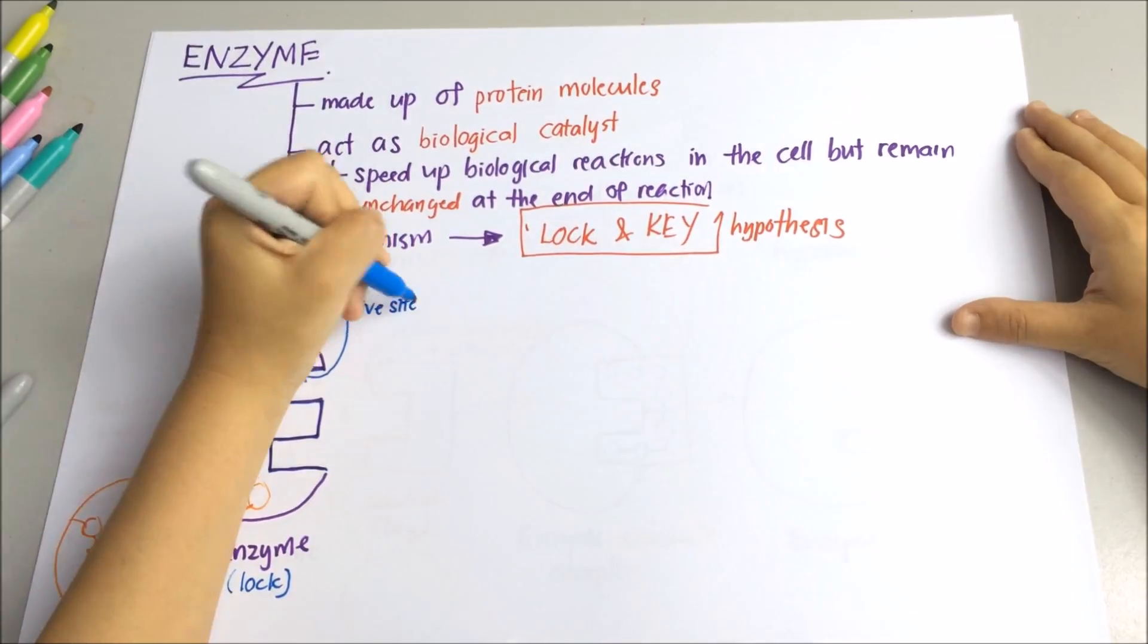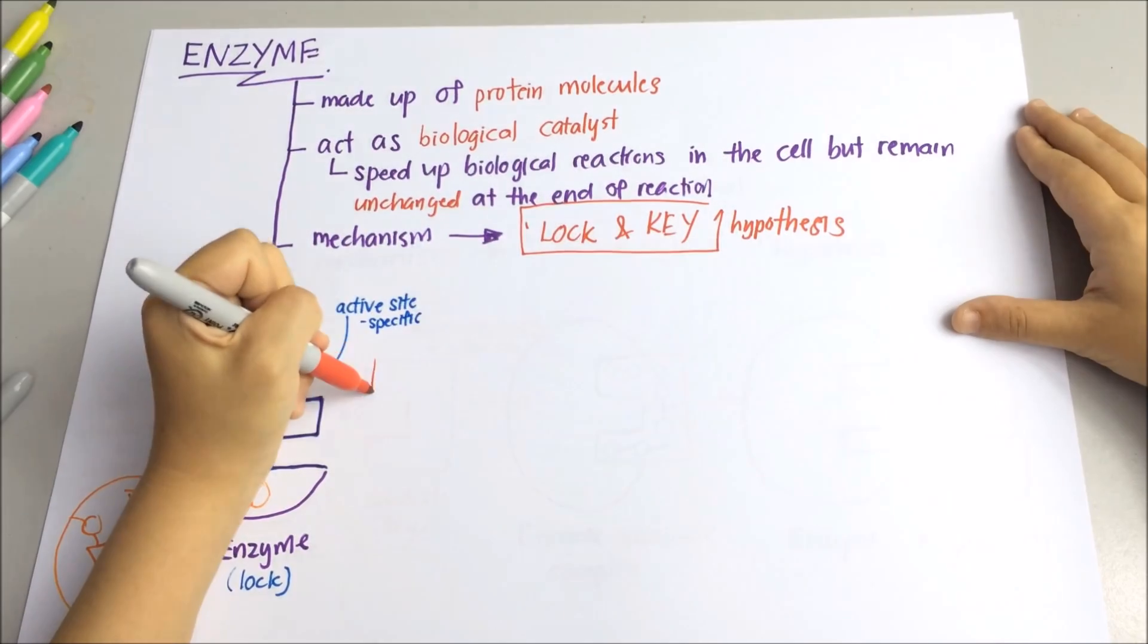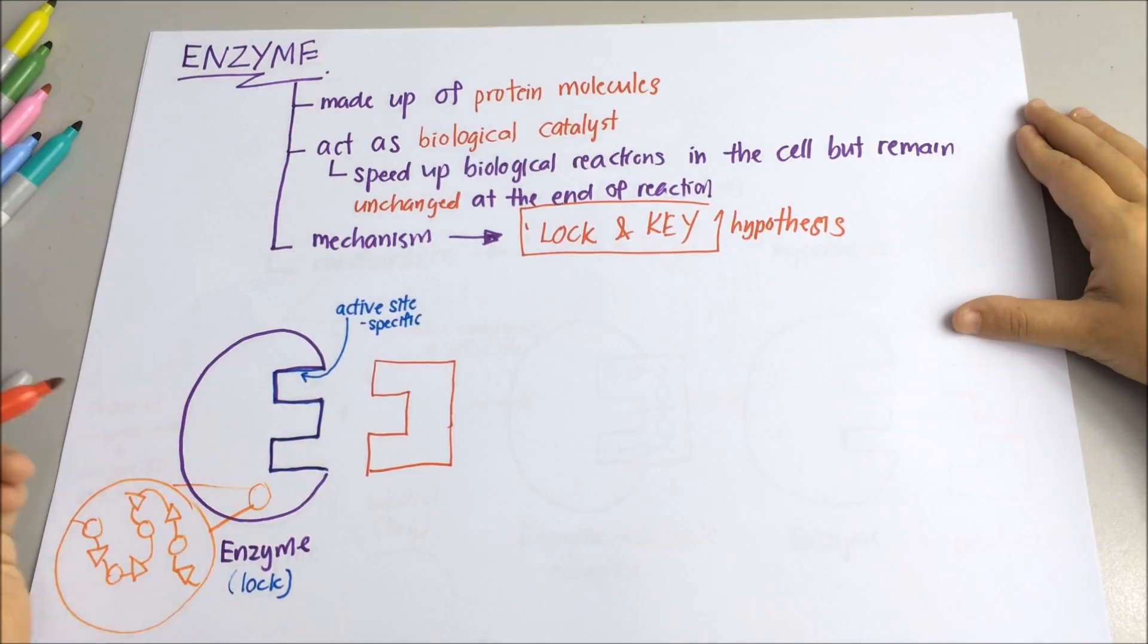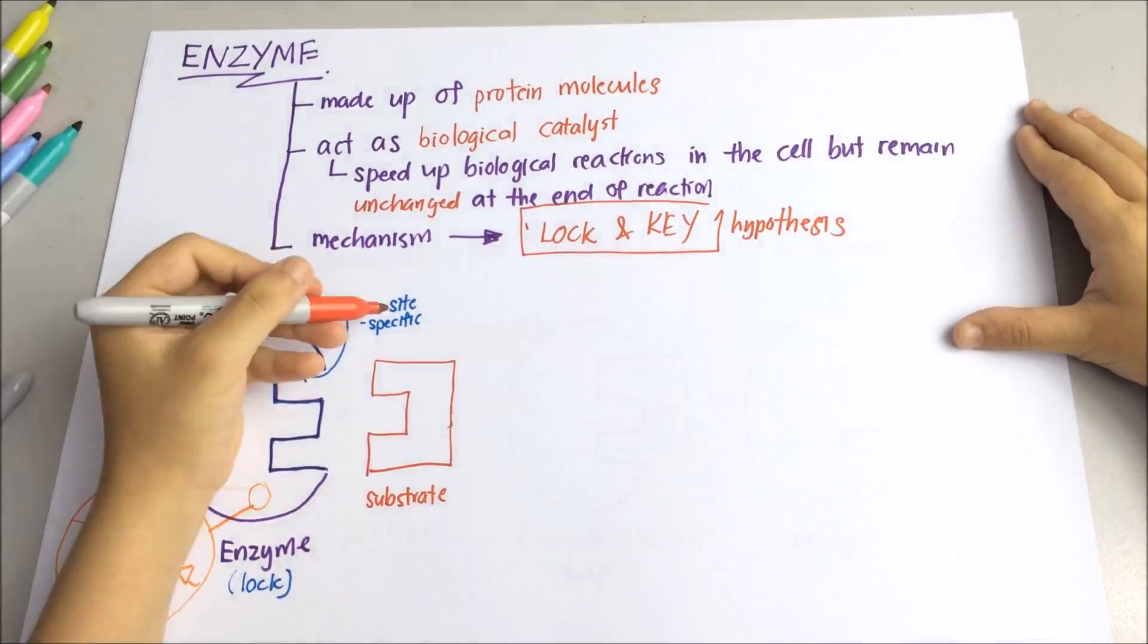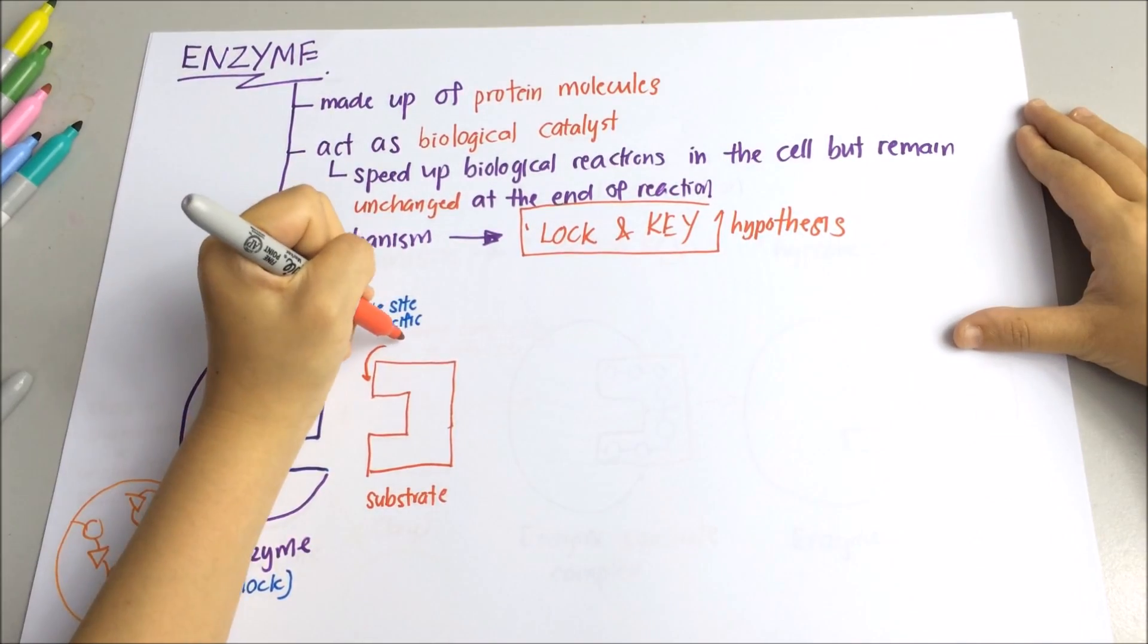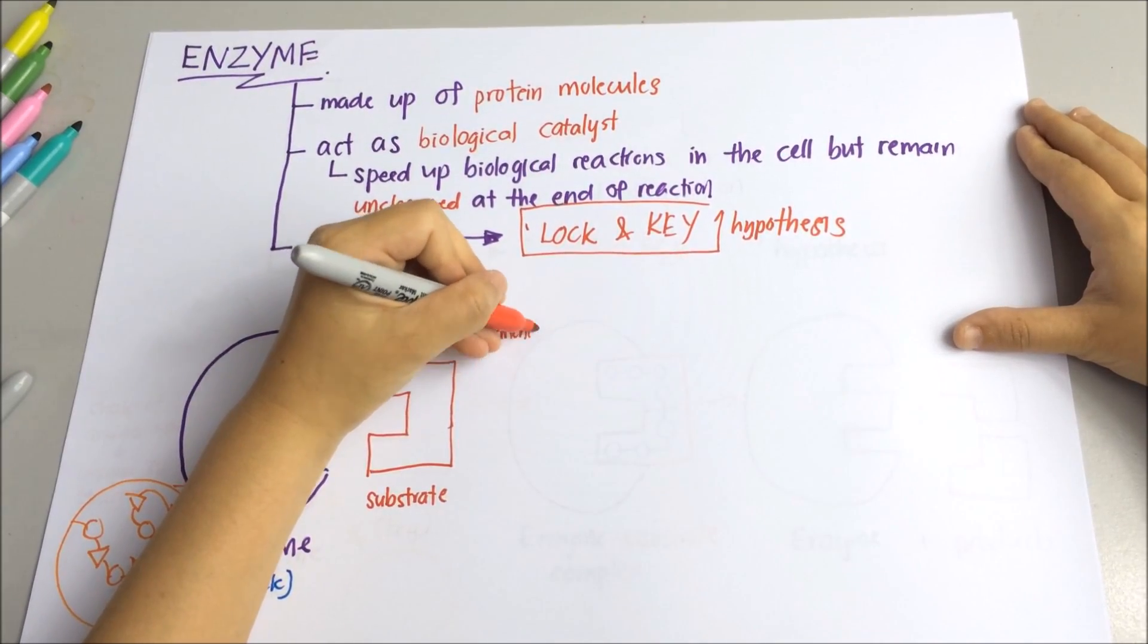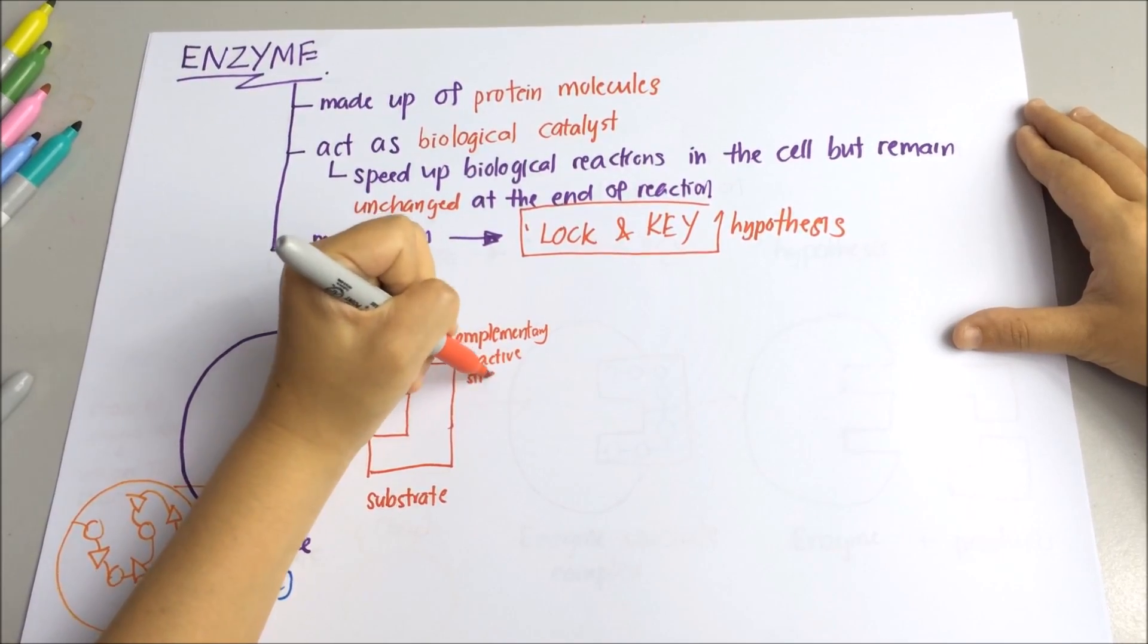And this is the substrate. The substrate must have a shape complementary to the active site of the enzyme so that it will fit into the active site like a key into a lock. So the substrate will act as the key.